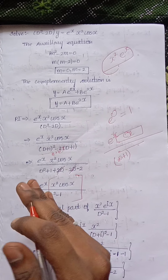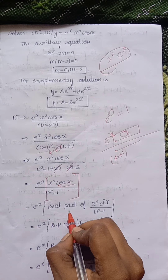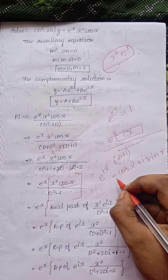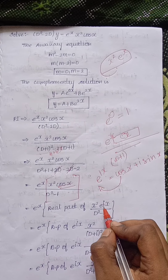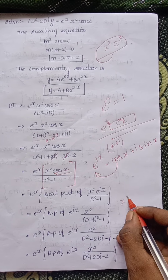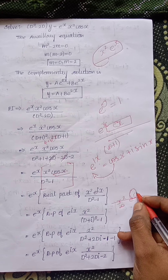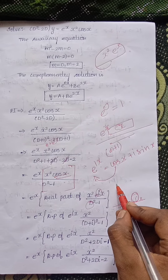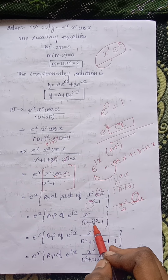Now e^x is separate. We write cos x as the real part of e^(ix), since e^(ix) equals cos x plus i·sin x. So the expression becomes the real part of e^x times e^(ix) times x² divided by (D² minus 1). We apply the shift method again — replacing D with D plus i — giving x² divided by (D+i)² minus 1.